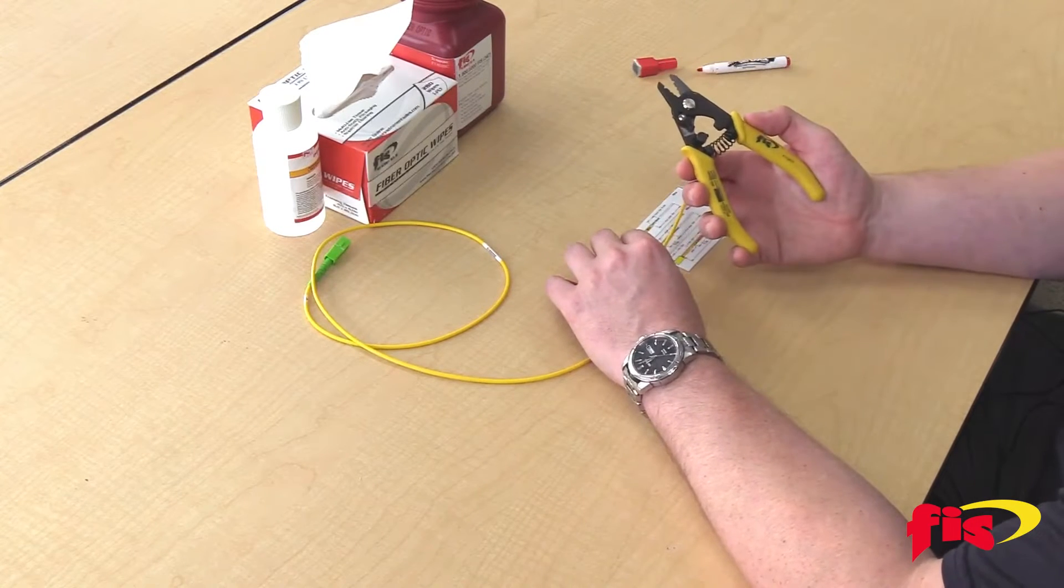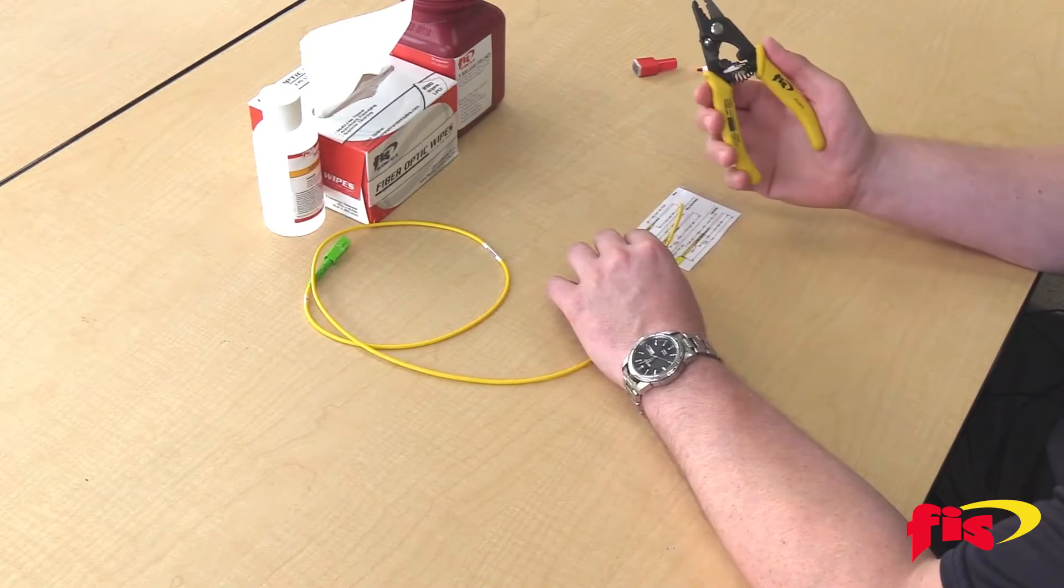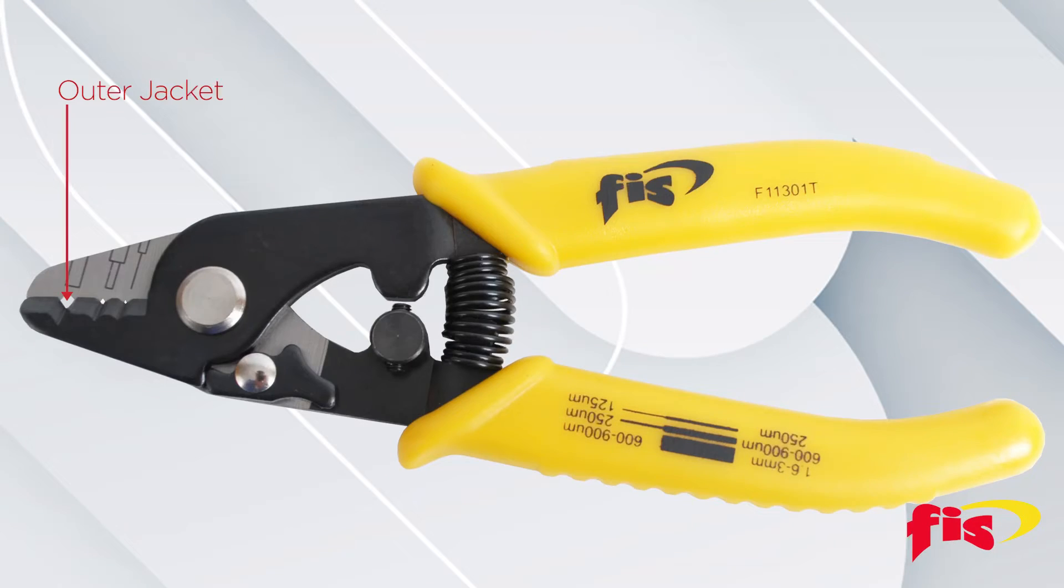Now I'm going to take my three-hole fiber optic strippers. The first hole is for your outer jacket. The middle hole is for your 900 micron tight buffer, and the final hole at the bottom is for your 250 micron acrylic coating.